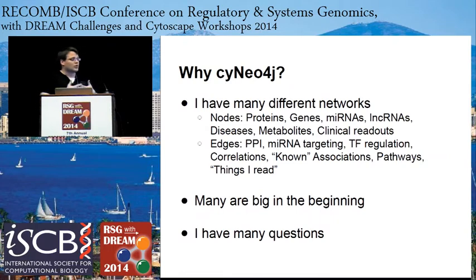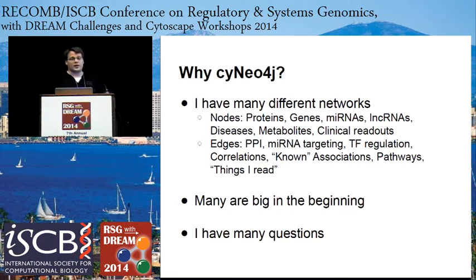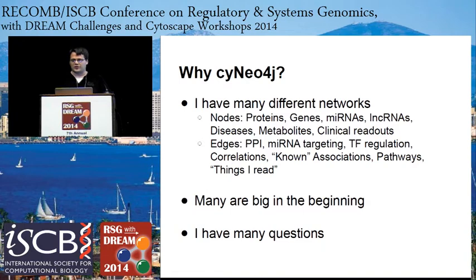From a biological use case, I'm embedded in a lab that does a lot of work on heart failure and another lab that focuses on liver failure. The practical question is: I have many different networks depending on the question asked or the project I'm working on, with a wide set of what the nodes can actually be. This goes from typical proteins and genes, microRNAs, but also things like clinical readouts or diseases. The edges can come from everywhere — typical STRING protein-protein interactions, microRNA targeting, known gene-disease associations, or things I read in articles, such as a metabolite having a connection to a disease.